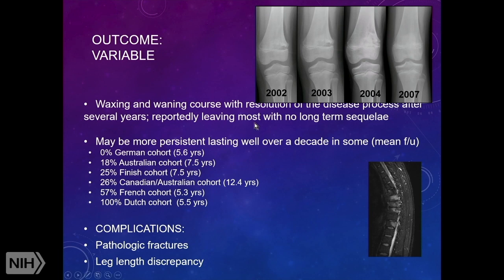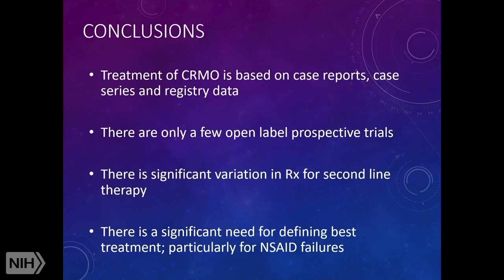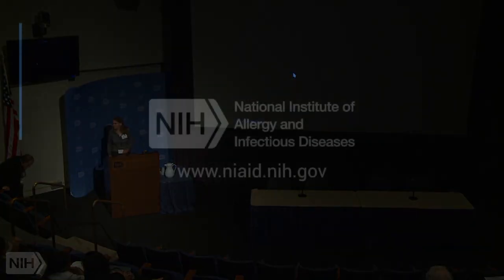CNO has a variable outcome — even without treatment, some patients heal. The likelihood of persistent disease over a decade ranged from 0% in a German cohort to 100% in a Dutch cohort. The biggest complications to avoid are pathologic fractures and leg length discrepancies. In conclusion, treatment of CRMO is based predominantly on case reports, case series, and registry data, with only a few open-label prospective trials. There is significant variation in second-line therapy, and we really need to define the best treatment, particularly for NSAID failures.